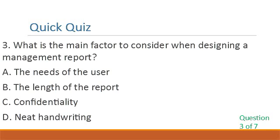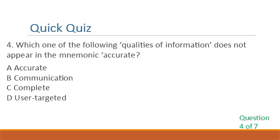Question 3. What is the main factor to consider when designing a management report? A. The needs of the user. B. The length of the report. C. Confidentiality. D. Need handwriting. Question 4. Which one of the following qualities of information does not appear in the mnemonic ACCURATE? A. Accurate. B. Communication. C. Complete. D. User-targeted.